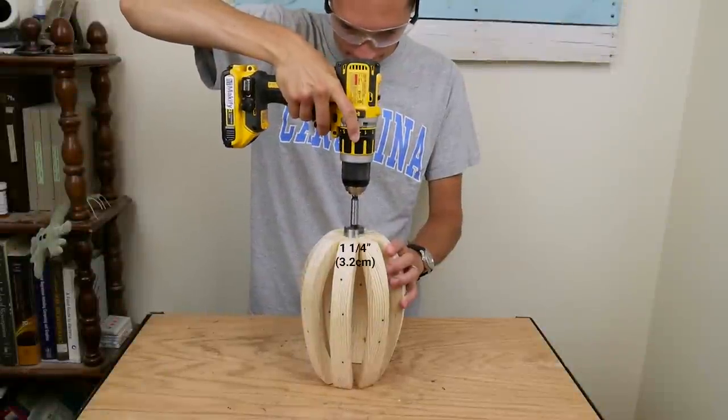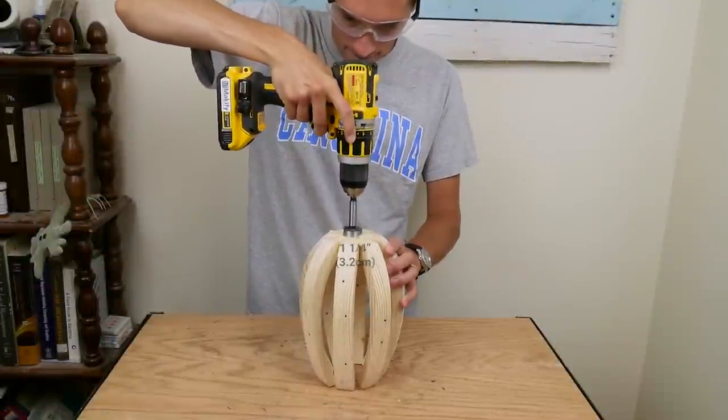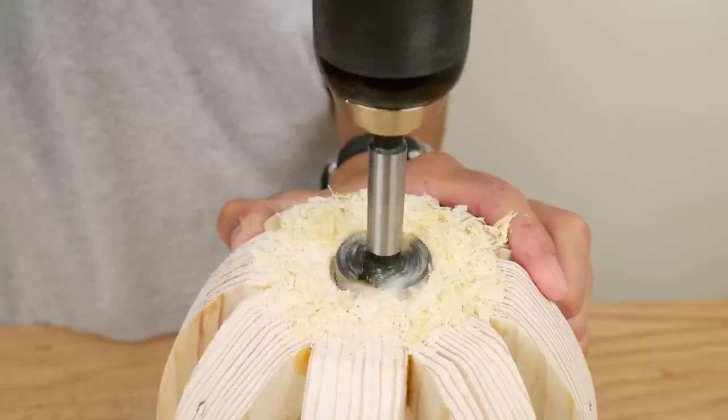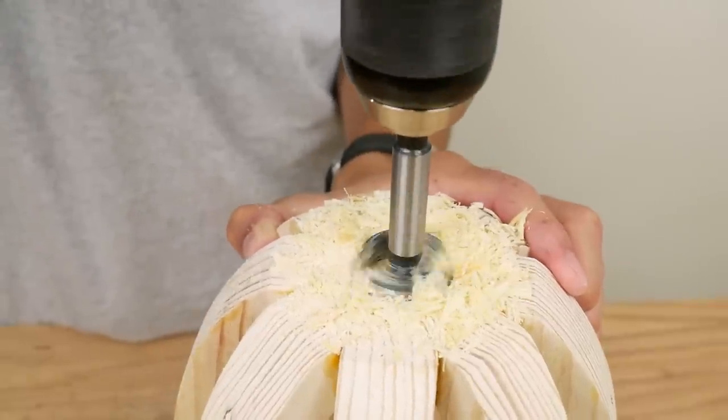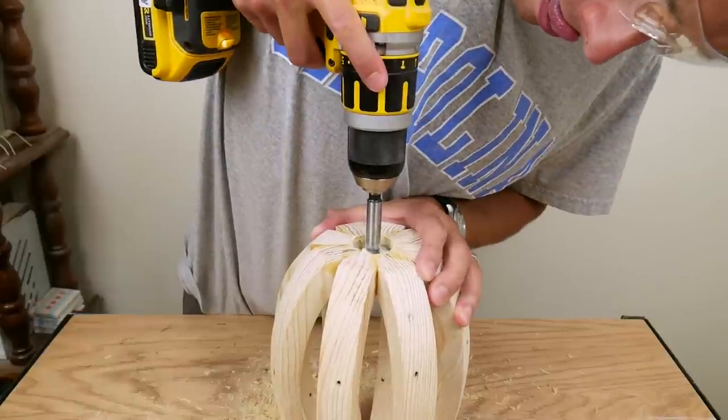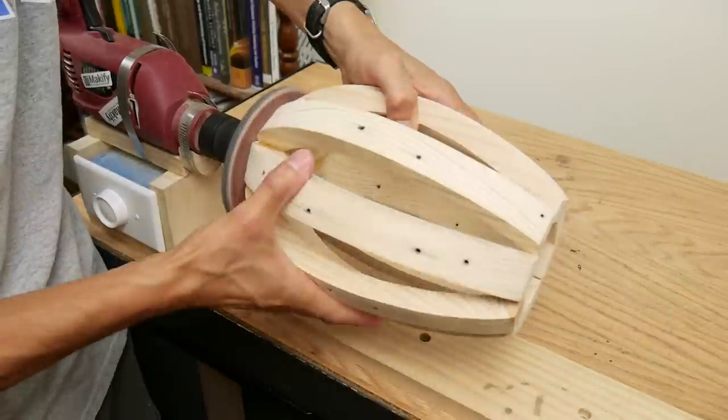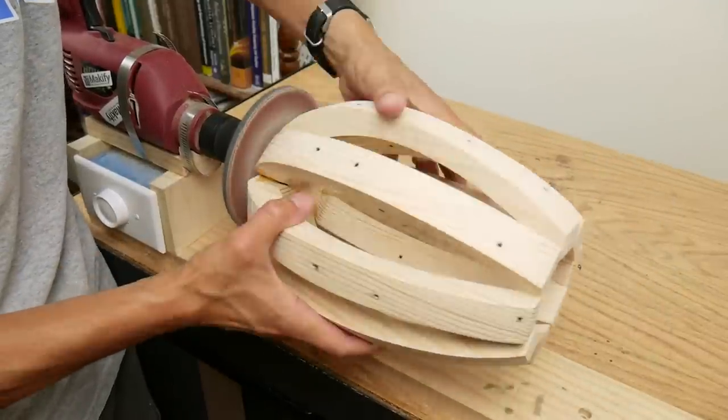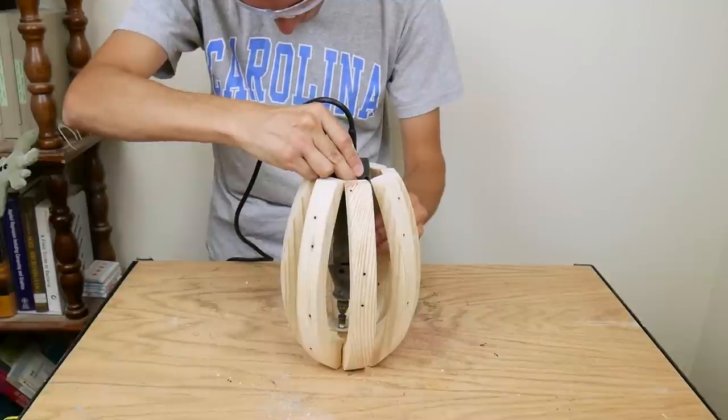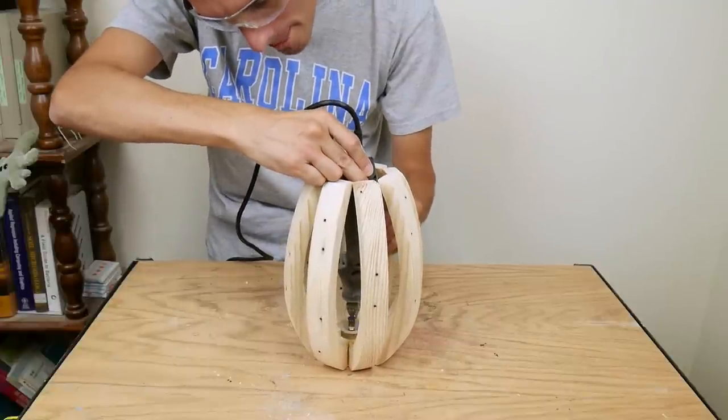I drilled a one and one quarter inch hole in the bottom of the lamp with a Forstner bit. And then sanded the bottom flat. I also sanded and scraped off the rest of the exposed dried glue.